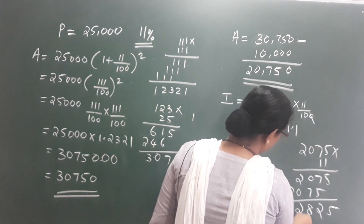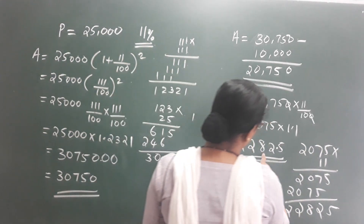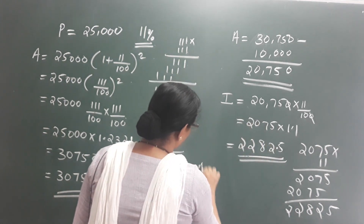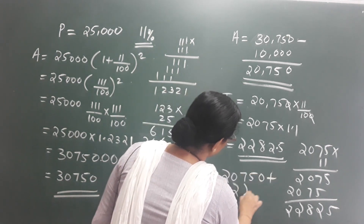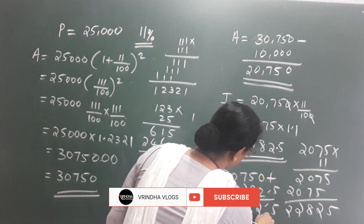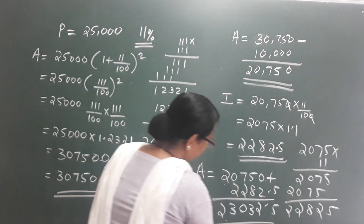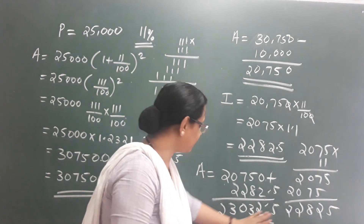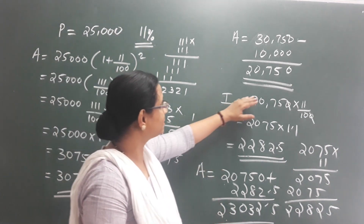After multiplying, we get approximately 22,825 rupees. This amount includes the interest added. The total amount equals 2,750 plus 2,282, giving us approximately 30,032 rupees rounded to 33 rupees. From this, we put the interest for the third year. We add the interest to the principal amount for the total amount owed at the end of the third year.